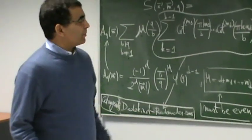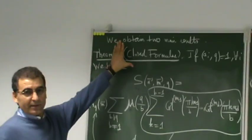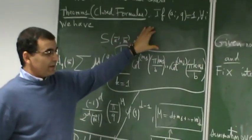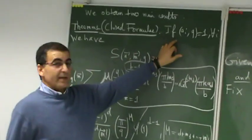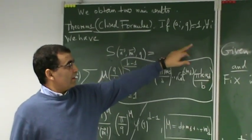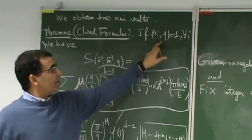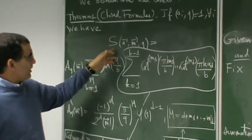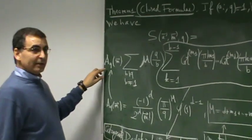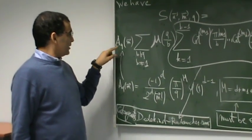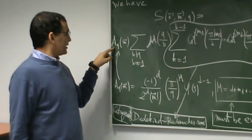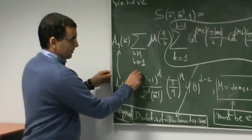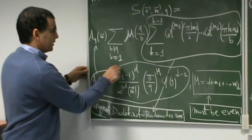For this problem we have two main results. The first one, we prove closed formula for this quantity precisely if each integer E1 to ED are co-prime to Q. So we have closed formula for this quantity exactly equal to this quantity capital A Q vector M. This quantity is defined by this quantity here, by this formula